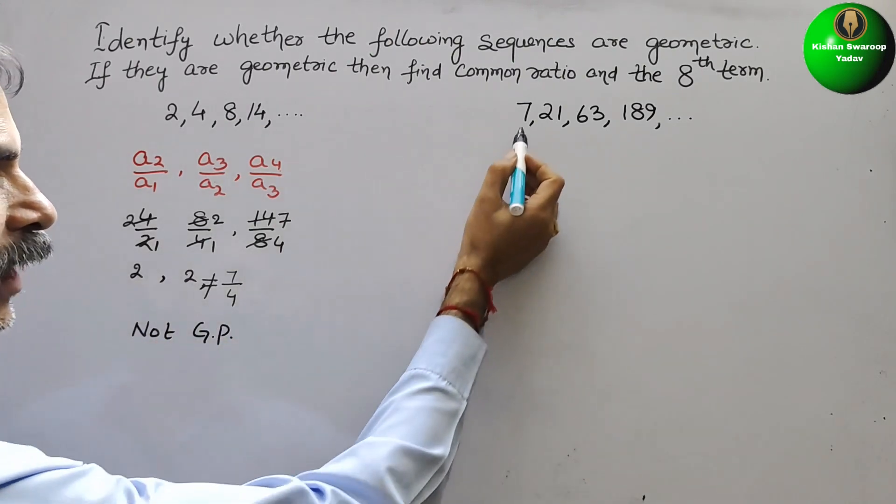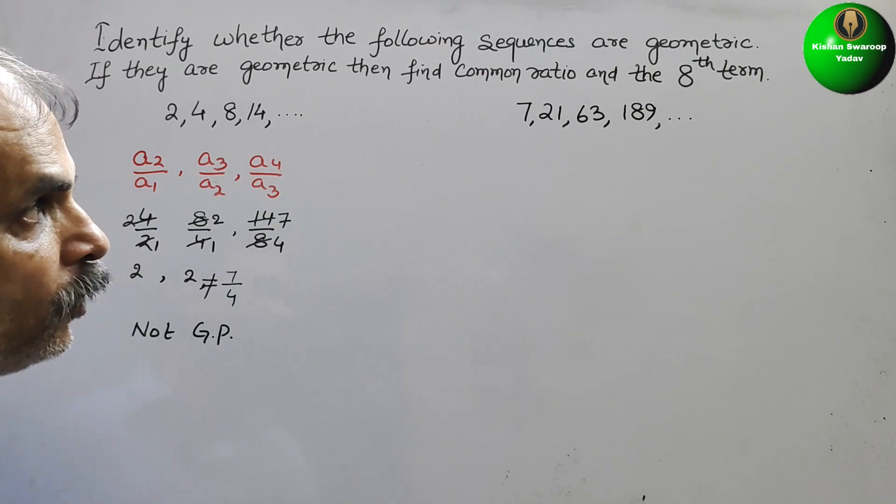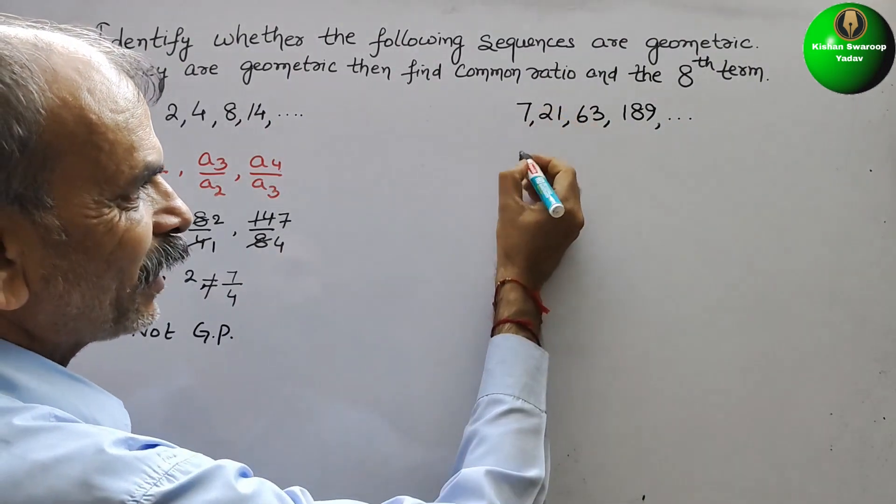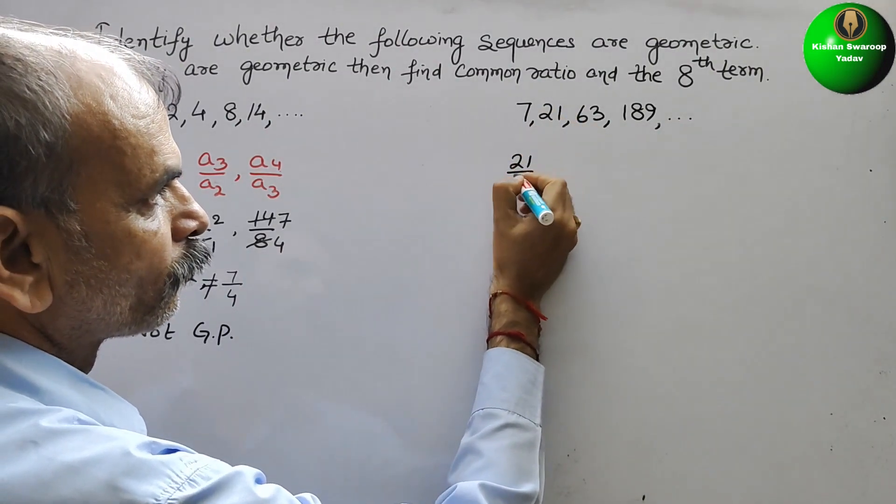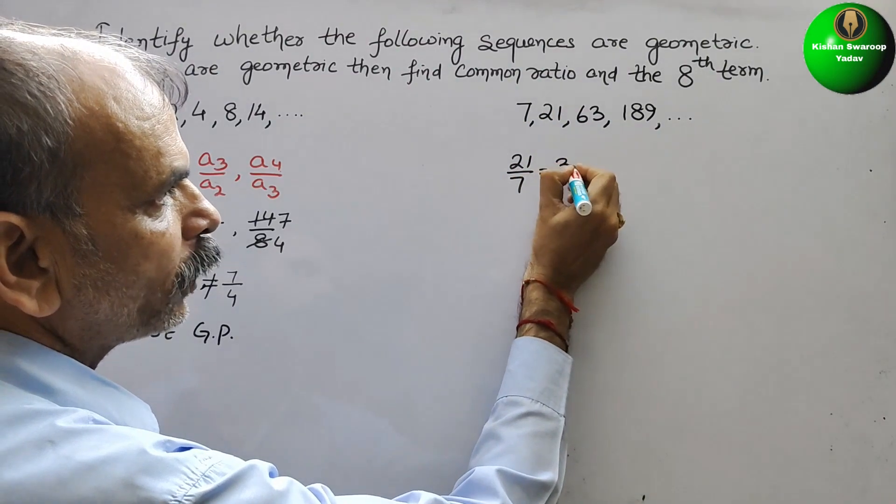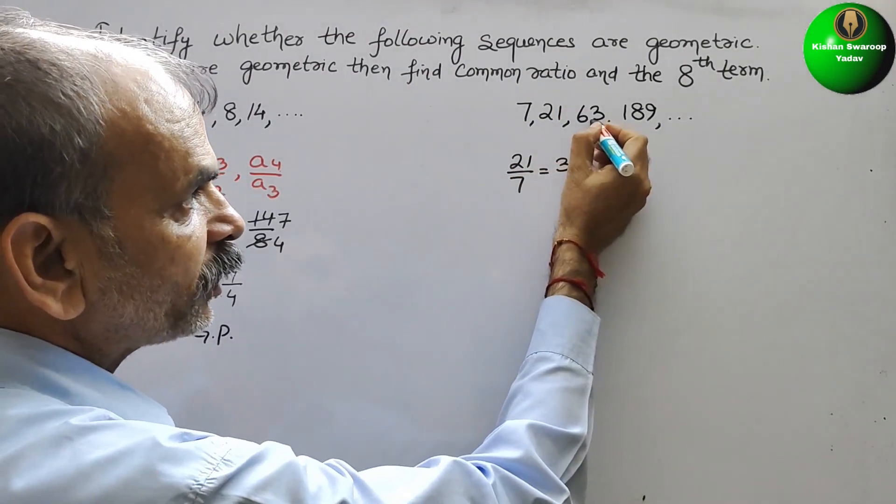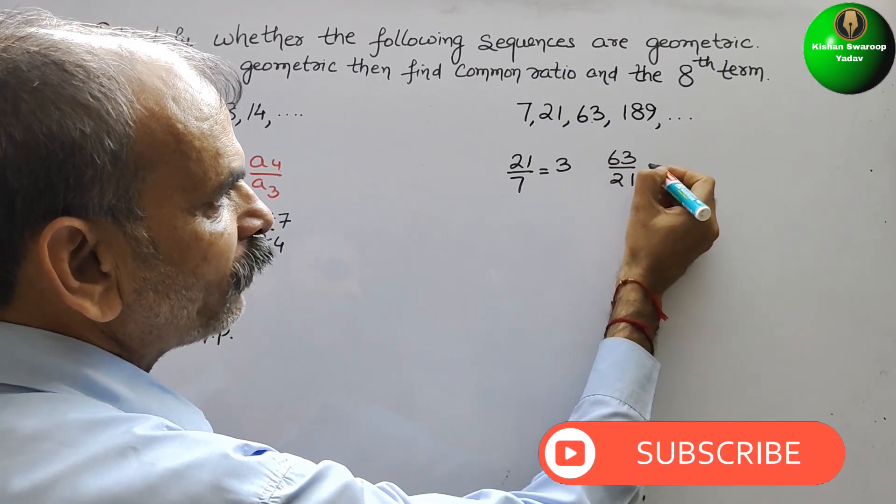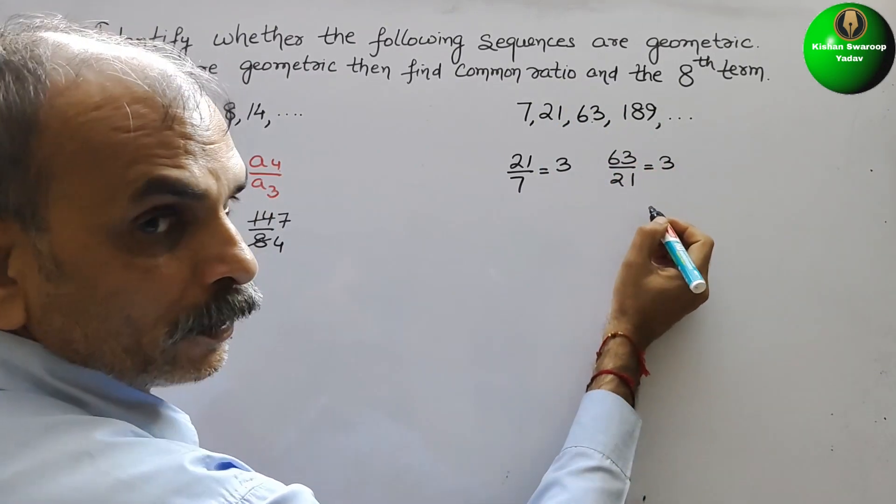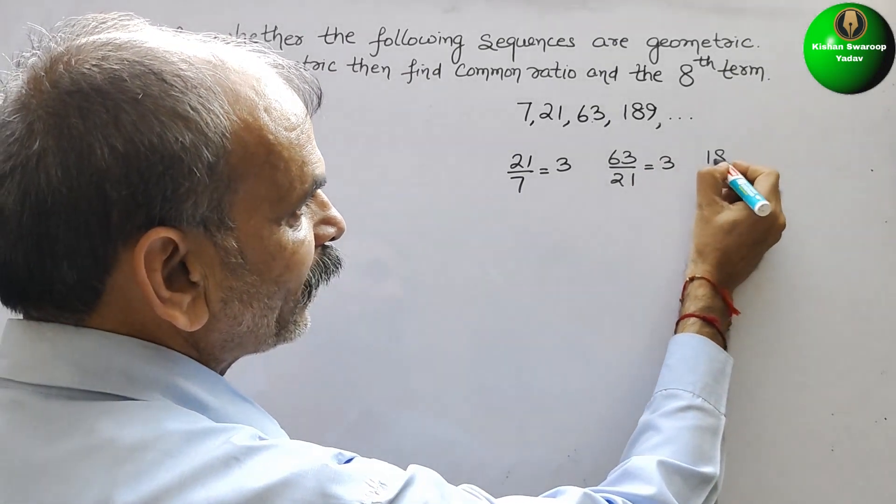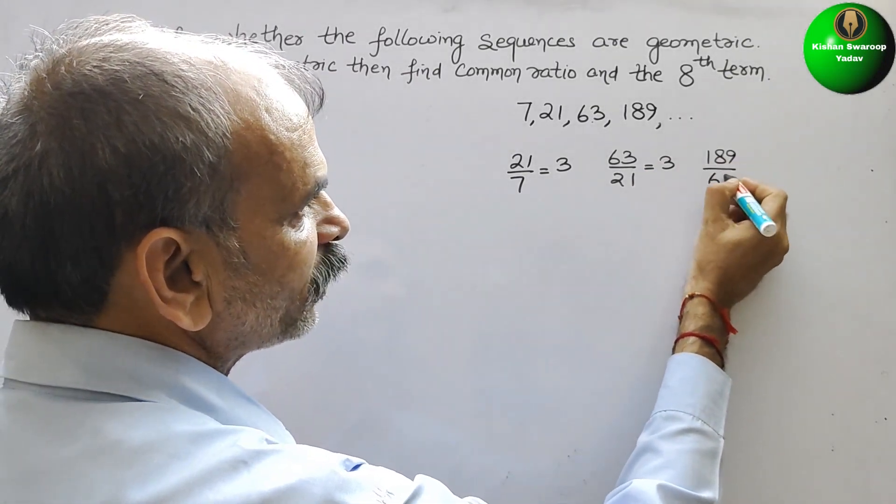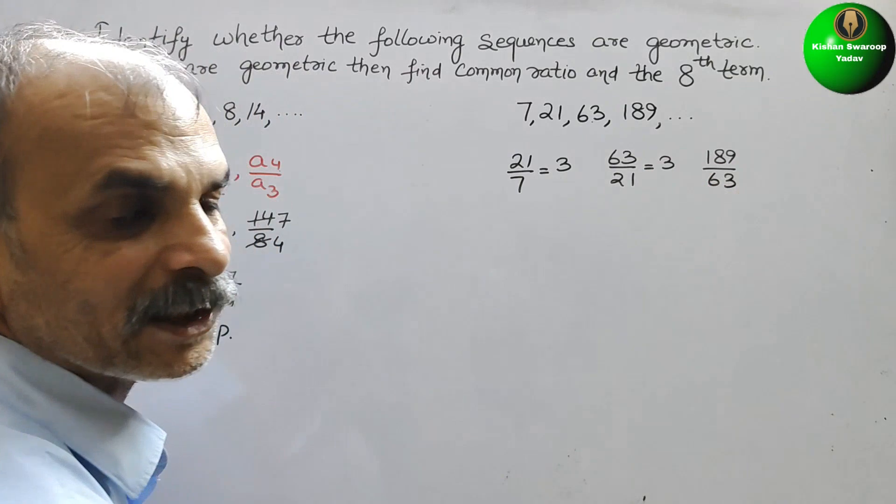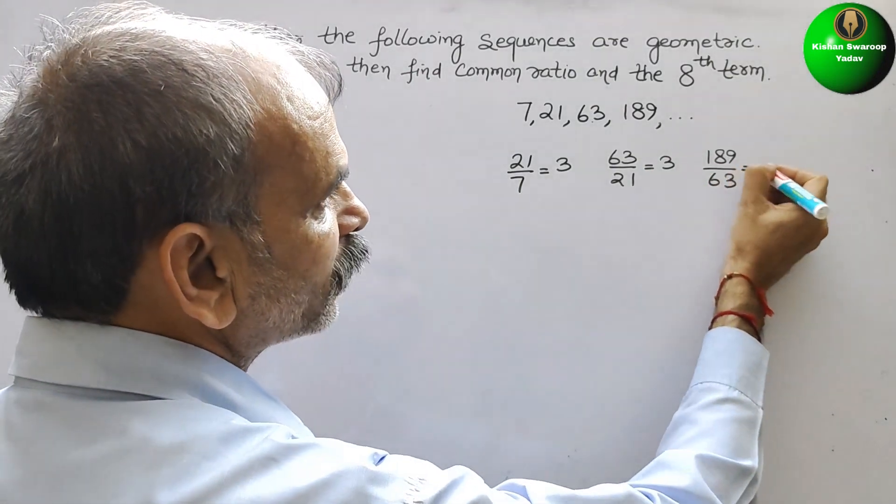Now, we will check here. Same. So here 21 by 7, that is equal to 3. Next, 63 by 21, again it will be 3. Next, 189 by 63. If you reduce by 63, again you will get 3.